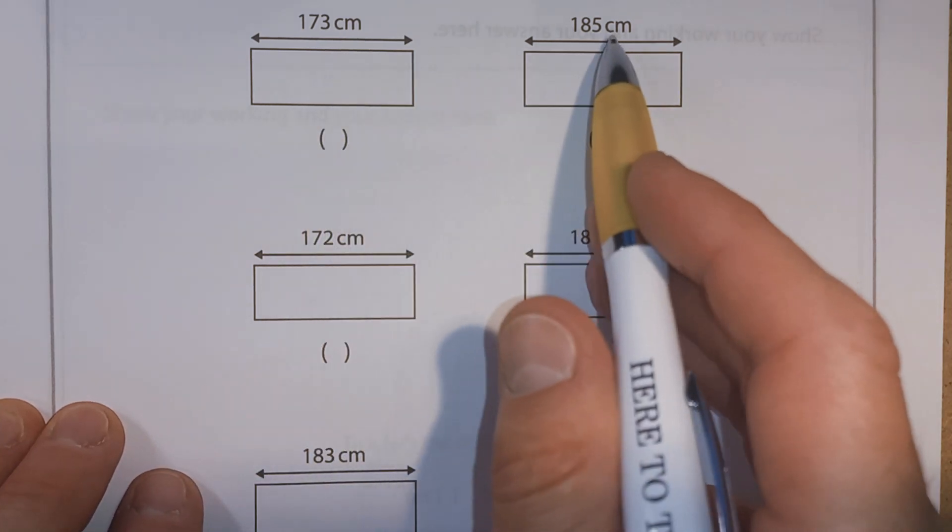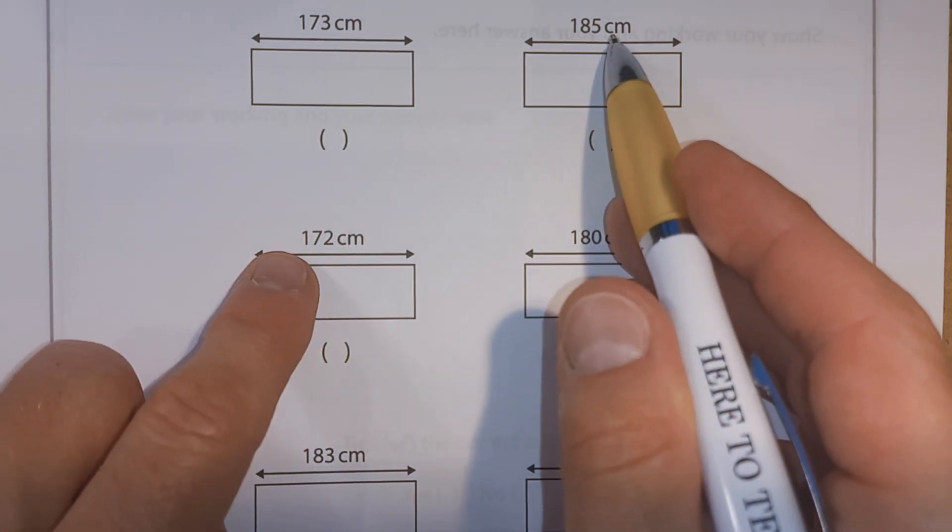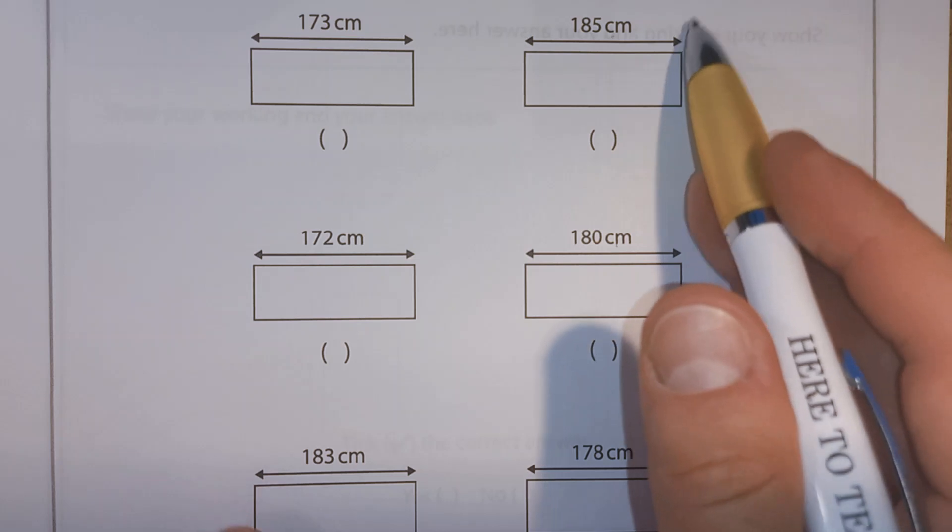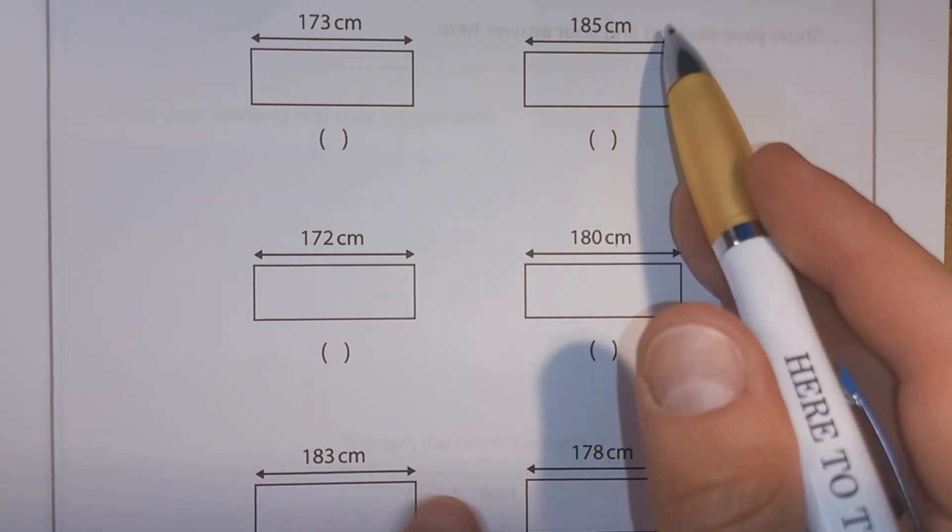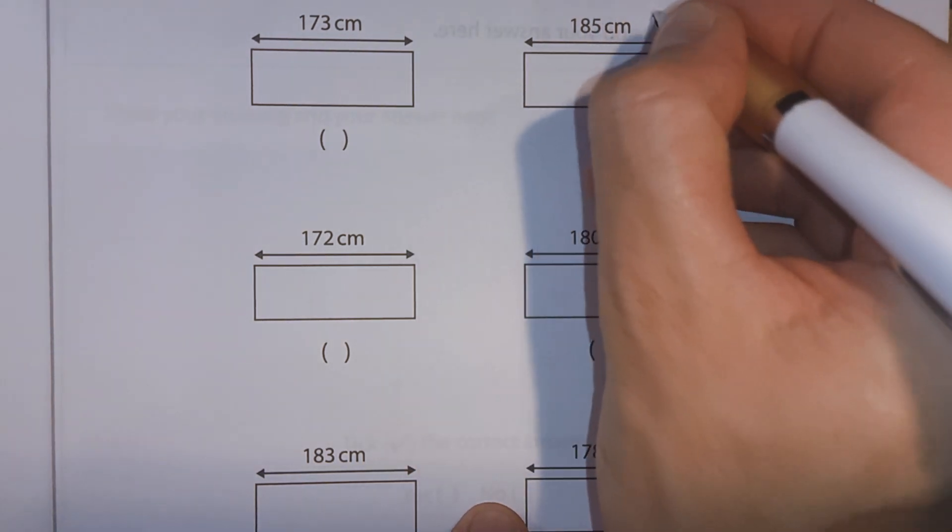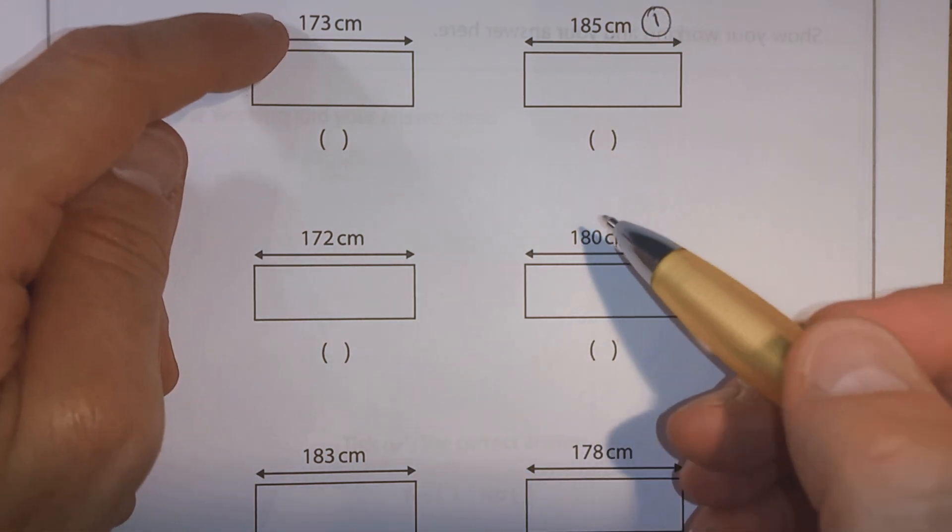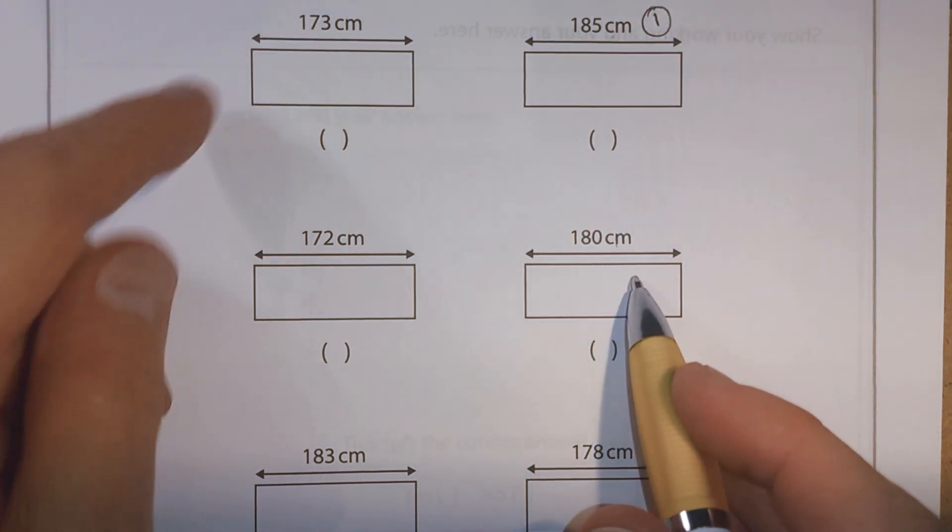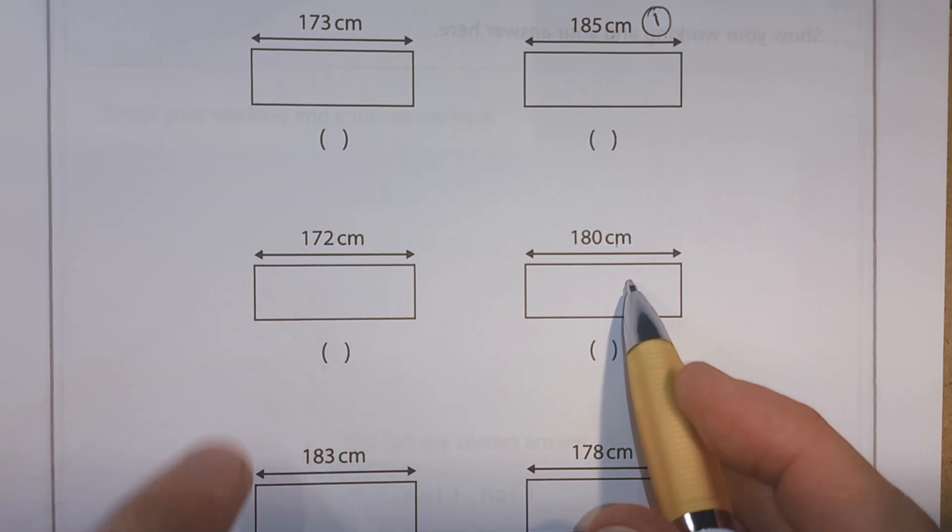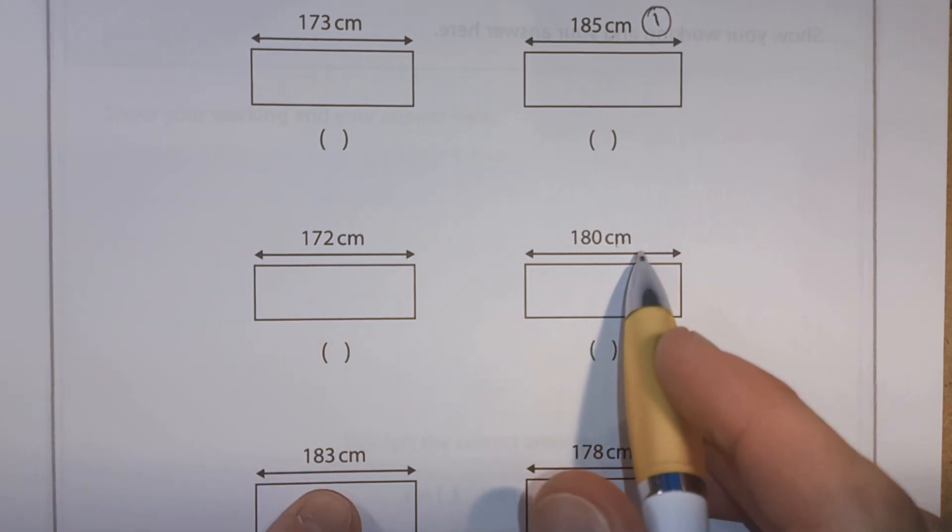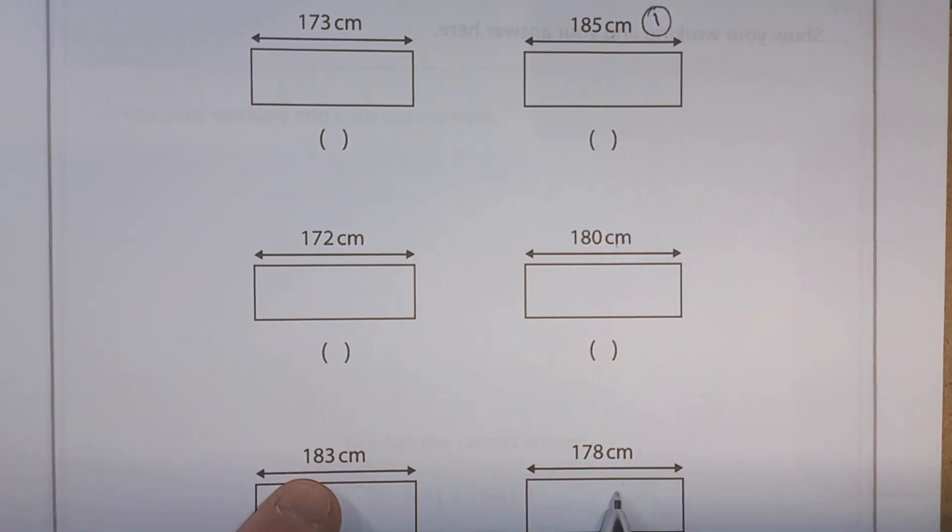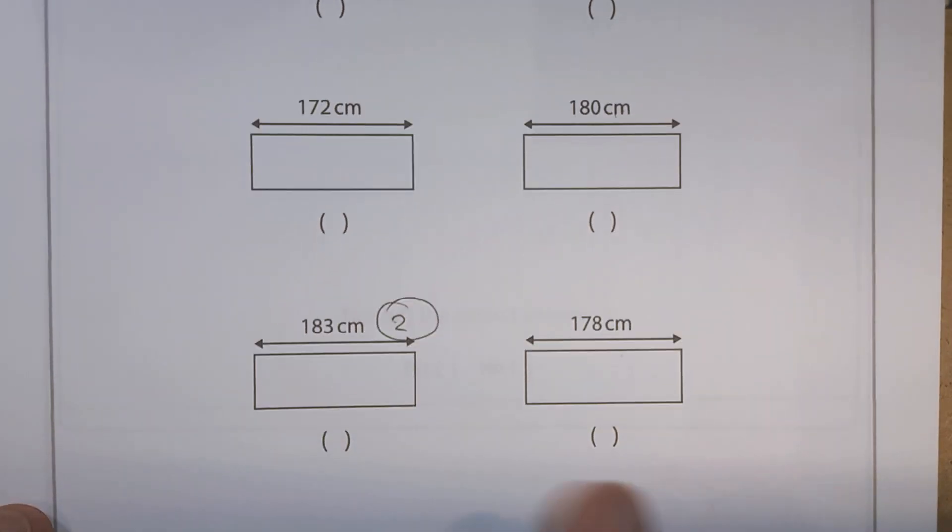Well, we've got 173. 185 would be longer. 170, 180. Any longer than this? No, this is still the biggest number. So this would be the first one. We want the second longest. We've got 173. Well, 180 is longer than that. It's longer than this one. But 183, that's going to be longer than 180. And it's also longer than 178. So this would be the second longest. So we can tick that one there.